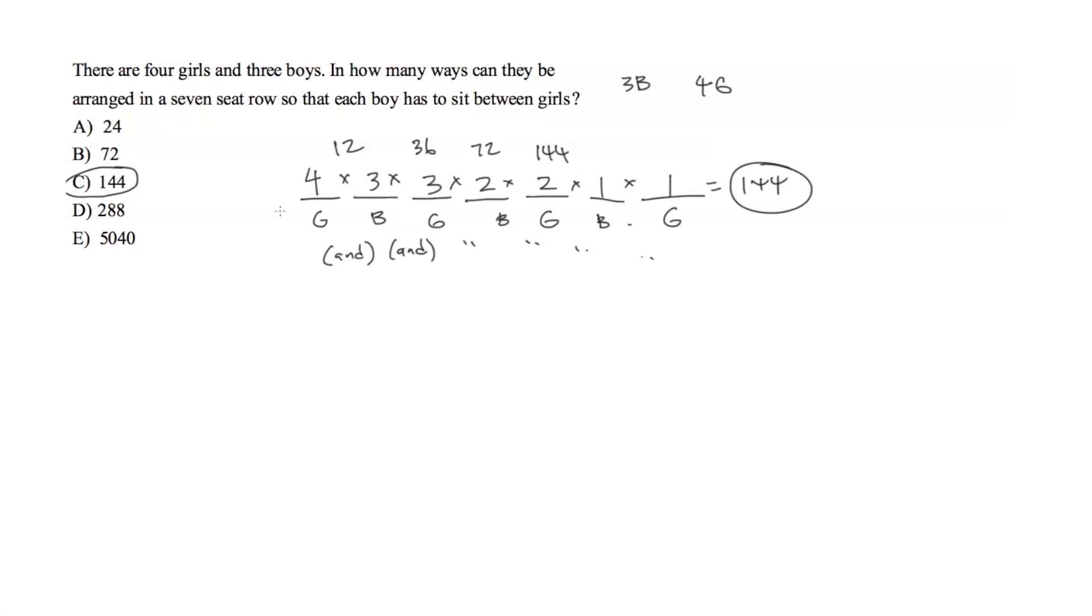And sandwich between each girl has to be a boy. So that's why we're labeling this G, B, G, B, G, B, G. And then we think in terms of how many options, or how many girls can we choose from, to sit in that first spot. And then if one sits there, then we only have one fewer choices next, for the next girl spot, and et cetera, and then we do the same for the boys.